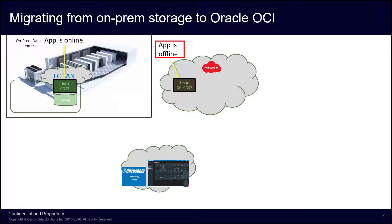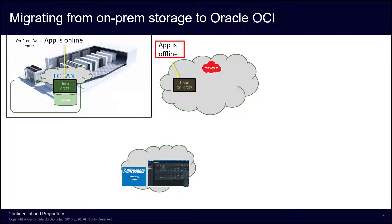This migration will be conducted as the data is in use at the source location. During the migration, Cirrus Data's Intelligent QoS will ensure that there is no impact to applications in production. For this migration, a Linux host is using a disk from the source storage configured with Multipath. The goal is to migrate to the new storage without any downtime throughout the deployment, migration, and final cutover process.